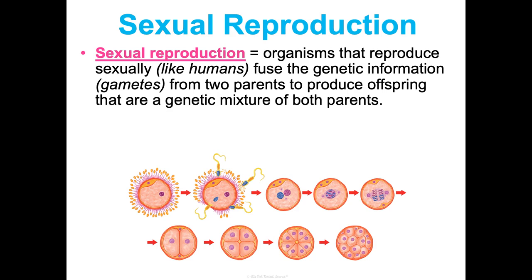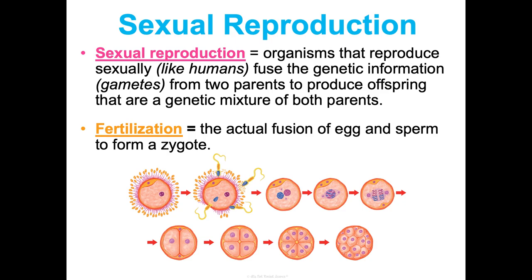Sexual reproducers — not all organisms are sexual reproducers. All it means is the fusing of genetic information, gametes, from two parents in order to produce offspring that are a genetic mixture of both parents. Humans are sexual reproducers — it takes two to tango. You need an egg and a sperm and those have to genetically fuse together to make the offspring. That fusing is fertilization: when the egg and sperm fuse and make the zygote. You'll have one egg and millions of sperm in semen that try to fertilize that egg — only one will make it.